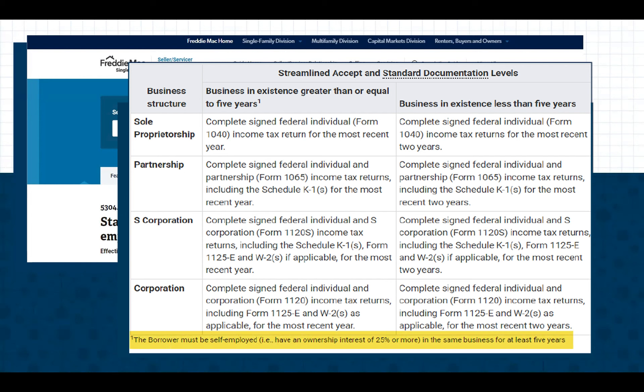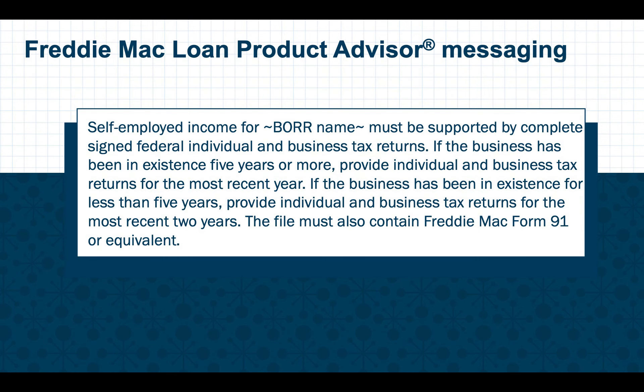Notice the highlighted area. The borrower must have had an ownership interest of 25% or more in the same business for at least five years. If you are working with Freddie Mac's Loan Product Advisor, the feedback messaging indicates that if the business has been in existence for five years or more, then only the most recent year of individual and business tax returns are required.